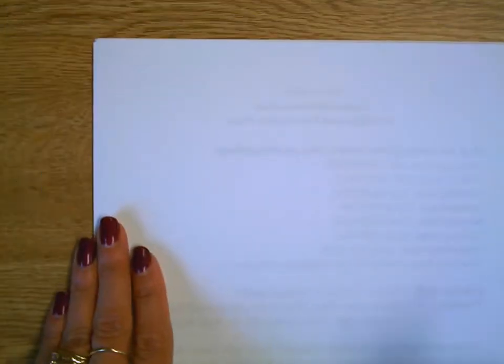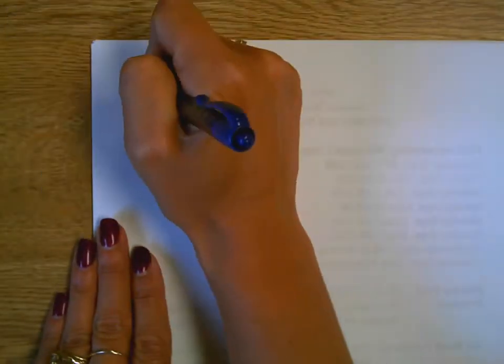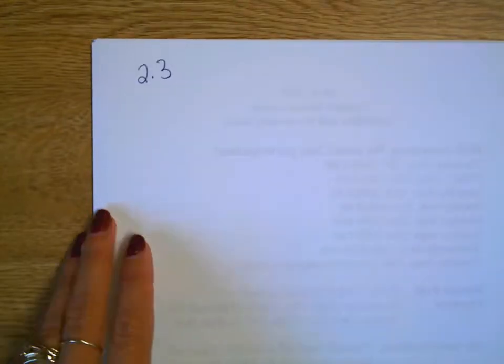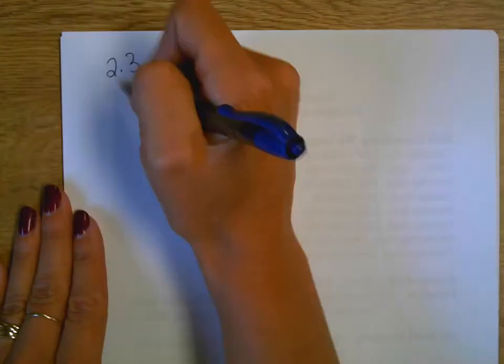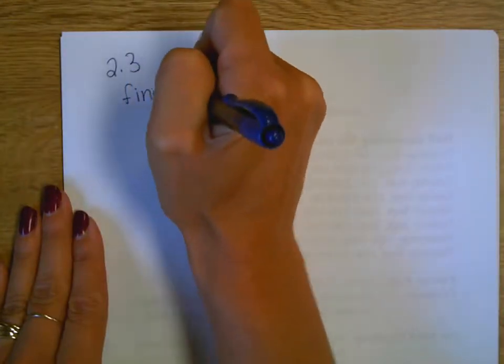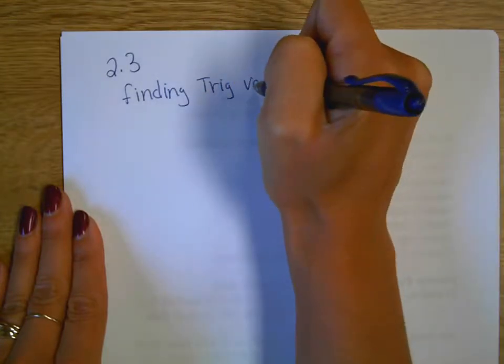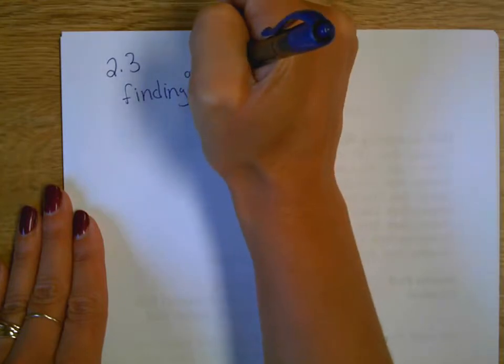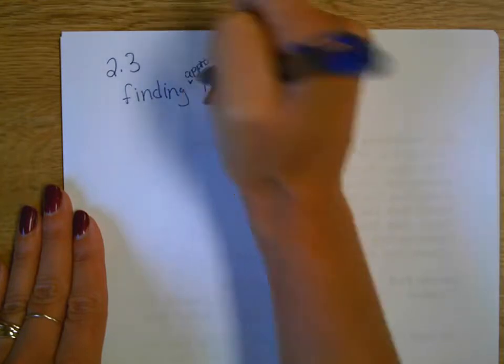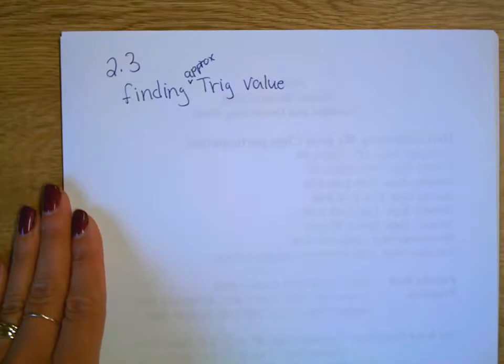Okay, we are on 2.3. We did 2.2 - it was all about the table and unit circle. I didn't label it correctly. But 2.3 is all about finding trig values. I should say approximate trig values, because what we just did was exact trig values. Your circle is all exact.